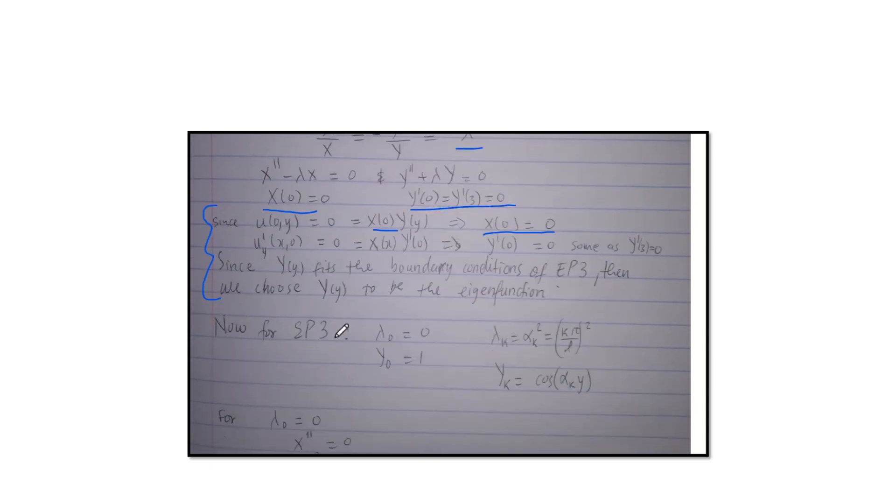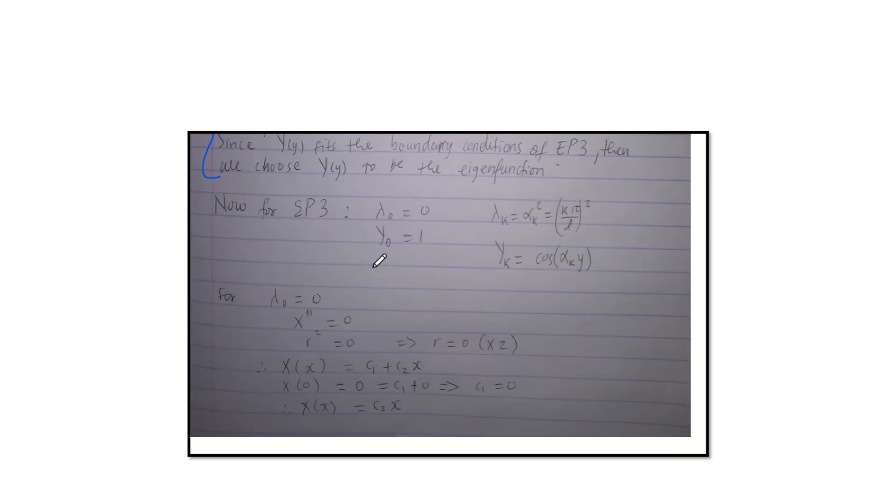And then remember, we're told that we can assume solution of the eigenproblem three without solving it. And then for eigenproblem three, we already know that the eigenproblem three has two eigenvalues and eigenfunction, which is eigenvalue zero, which is eigenfunction one, and the one of alpha k squared, which is also like that.